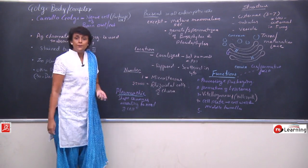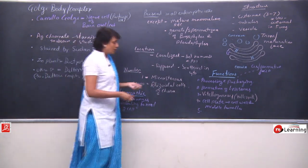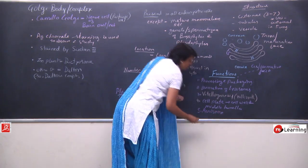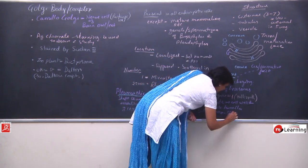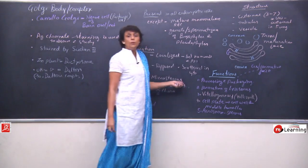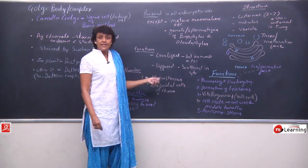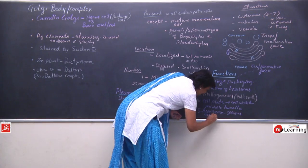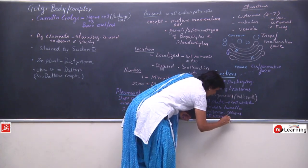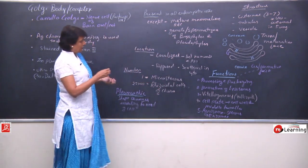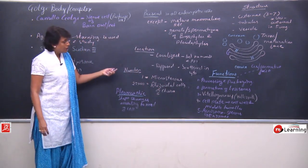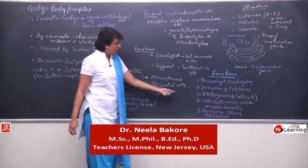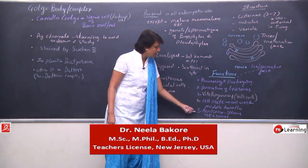In human sperm, the Golgi body changes into a structure called the acrosome. This acrosome secretes or releases enzymes which digest the walls around the egg. So Golgi body not only helps in packaging and processing but also helps in cell plate formation, vitelogenesis, and acrosome formation.